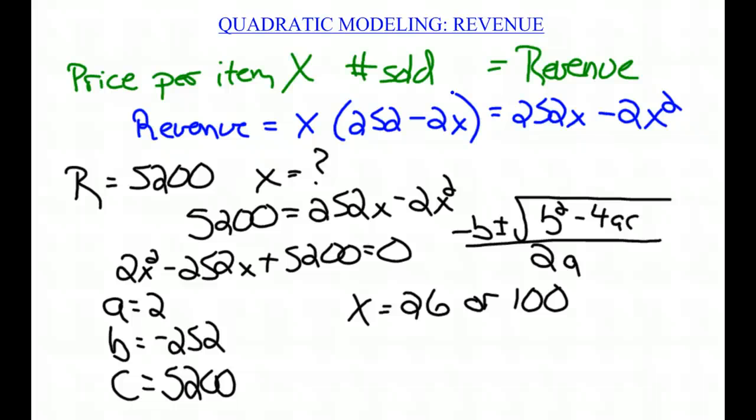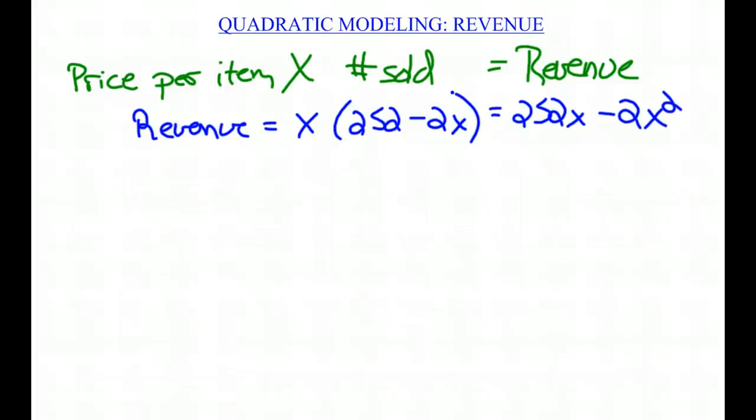The next question is, what number of tickets sold produces the most revenue for the buyer? I mean, what would be that ideal number of tickets to get the highest amount of revenue? What we're talking about here is the vertex. We have a quadratic equation Y equals 252X minus 2X squared.